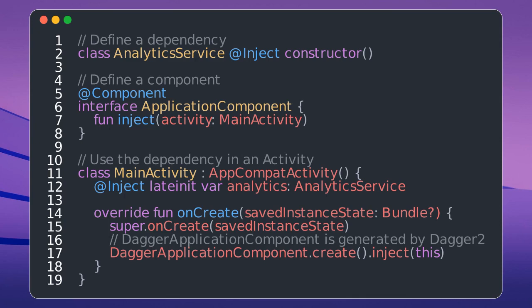When you run this code, Dagger2 will inject an instance of AnalyticService into MainActivity at runtime. The @Inject constructor tells Dagger2 how to provide an instance of AnalyticService.